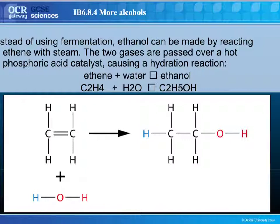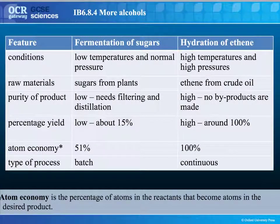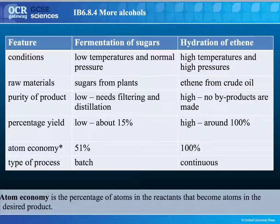The second process is the hydration of ethene. Ethene — C₂H₄ — reacts with water, hence the word 'hydration', to form ethanol. This has to be done at high pressure, high temperature, and requires a catalyst, which is hot phosphoric acid. The ethene used in this process comes from crude oil, making it an unsustainable process since crude oil will run out — it's a finite resource. However, you get very high purity, very high atom economy, and high percentage yield.